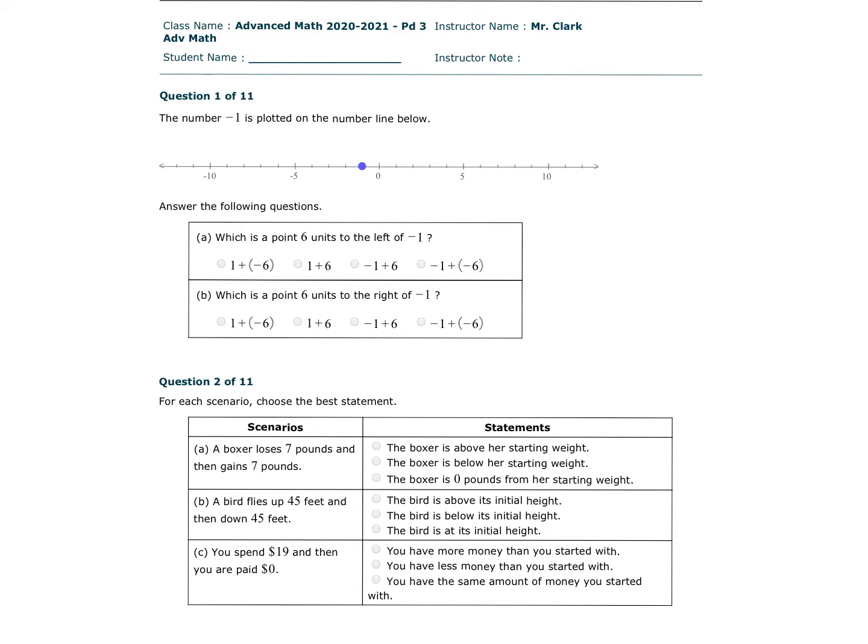The number negative 1 is plotted on the number line below. Okay, clearly, as we go to the left, it gets smaller; to the right, larger.